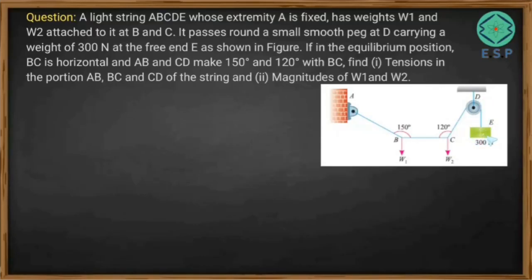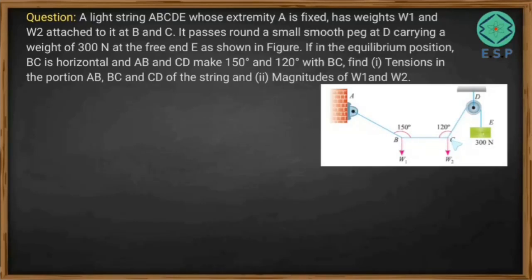In the equilibrium position, BC is horizontal, and AB and CD make 150 degrees and 120 degrees with BC respectively. We need to find the tensions in portions AB, BC, and CD of the string, and also find the magnitudes of W1 and W2.